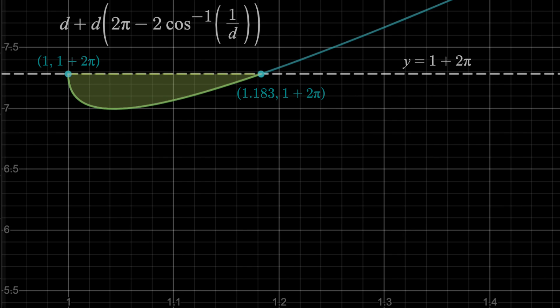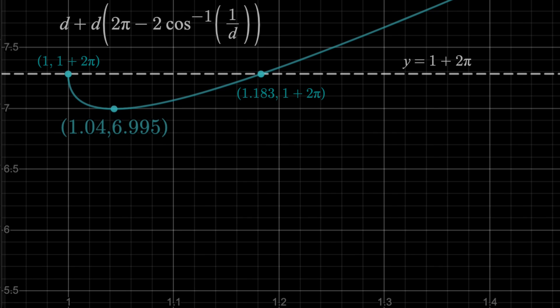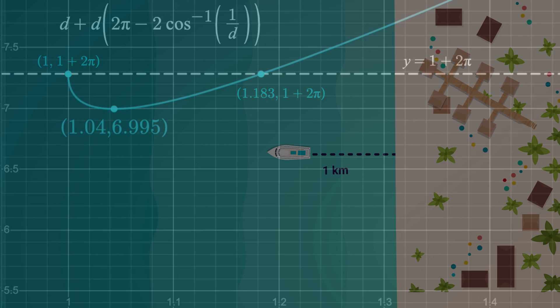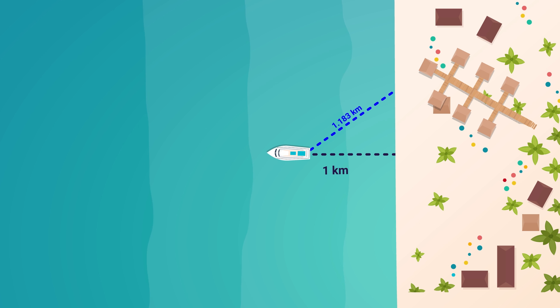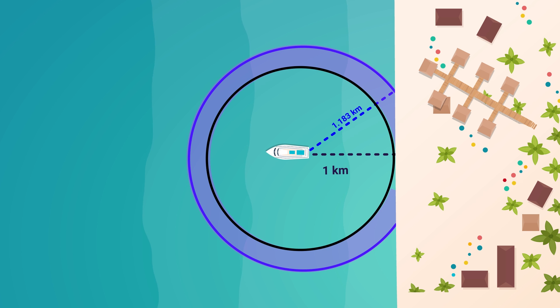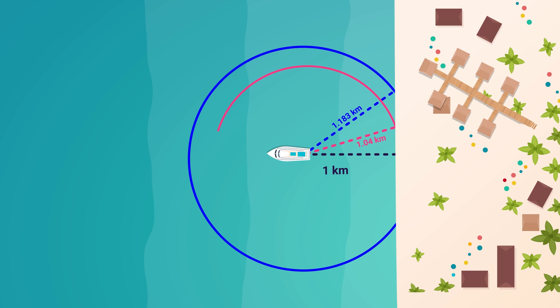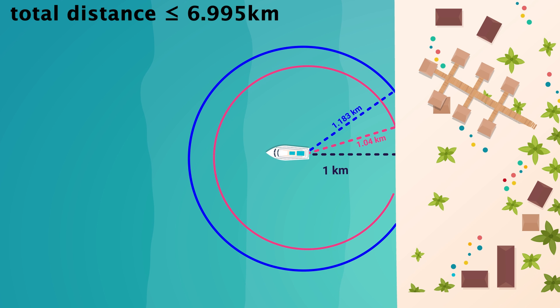And the absolute minimum lies here, at 1.04 comma 6.995. So, we can drive anywhere between 1 and 1.183 kilometers at first, and then in a circle, and do better than the previous method. But 1.04 kilometers is the actual minimum, where you would drive guaranteed 6.995 kilometers or less.